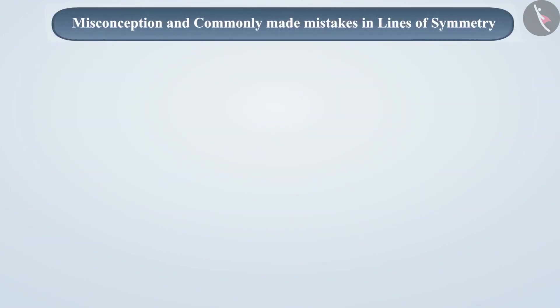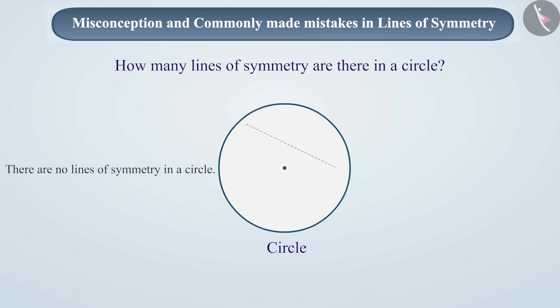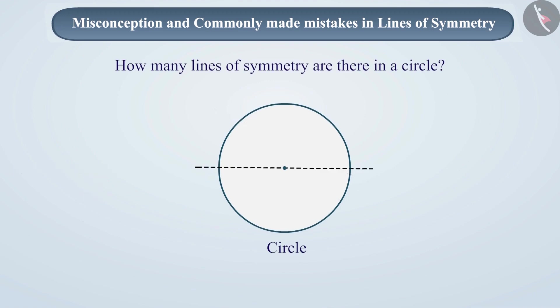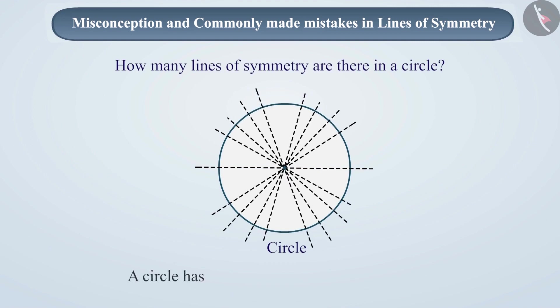Let's discuss some commonly made mistakes in lines of symmetry. If we ask students about the number of lines of symmetry in a circle, then without using the knowledge of lines of symmetry, they say that a circle has no lines of symmetry. Some students draw lines which don't pass through the center, and hence the two divided parts don't cover each other properly, so they conclude there are no lines of symmetry in a circle. But this is a wrong understanding. Any line passing through the center of the circle divides it into two symmetrical parts. Since we can draw an infinite number of lines through the center, there are infinitely many lines of symmetry in a circle.